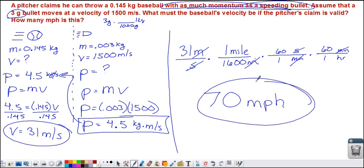So, do we think the pitcher can throw this fast? Yeah. I know pitchers can throw 70 miles per hour. Therefore, yeah, he can throw a baseball with as much momentum as a speeding bullet. This is why it's dangerous to get hit by a pitch.